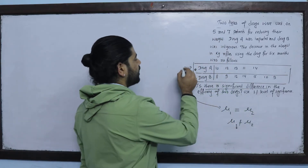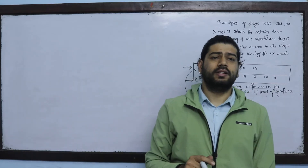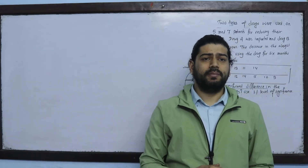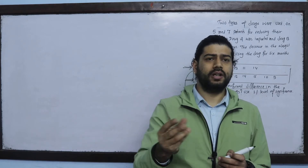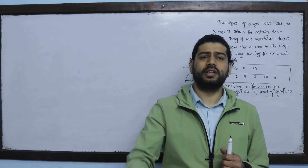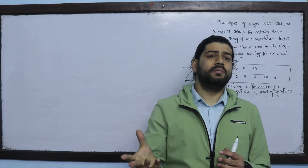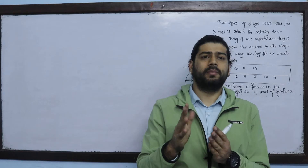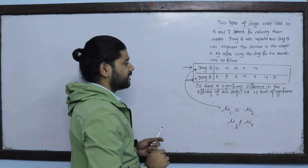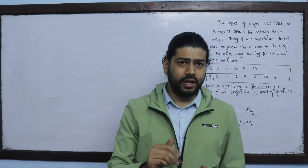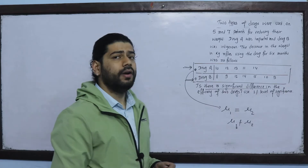This is an unrelated sample — there is no before-and-after or paired condition here. When samples are dependent, we use a paired test, but in this case we have separate, independent samples. So we will use the independent samples T-test for the difference of two means.